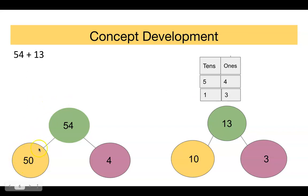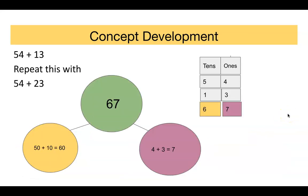But once again, we have 50, 10 over here, 1 ten, five tens, four ones, three ones, and we're going to put together to our total of 67. And here, 50 plus 10 is 60. Four plus three is seven. And we get 67.